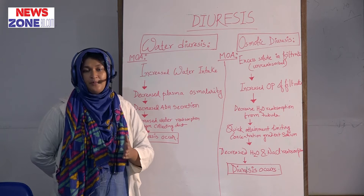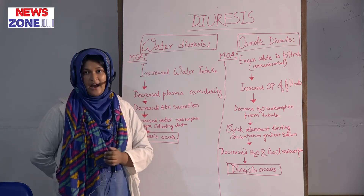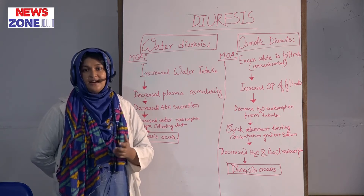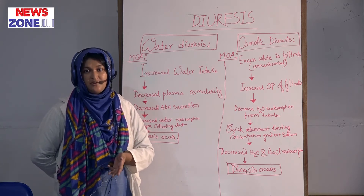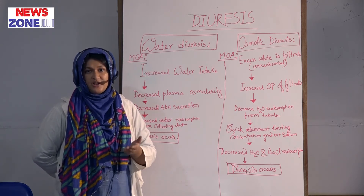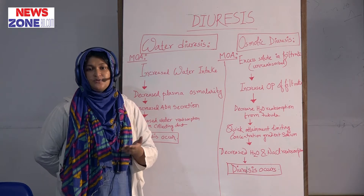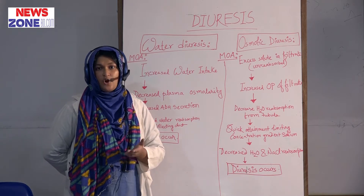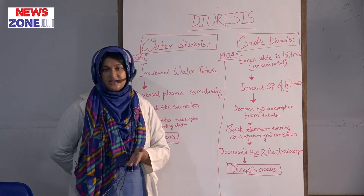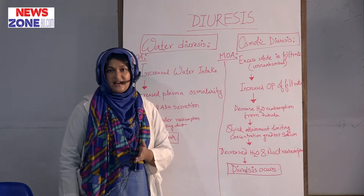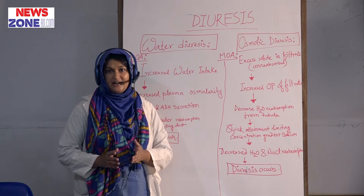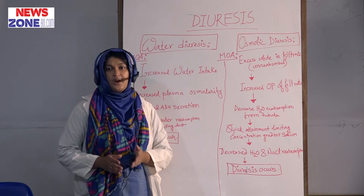Now, the types of diuresis. There are three types of diuresis: pressure diuresis, water diuresis, and osmotic diuresis. First, we will discuss about water diuresis.